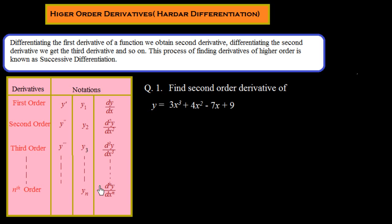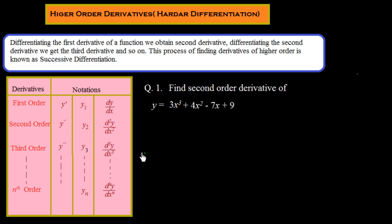Now let us take an example. We have to find the second order derivative of y = 3x³ + 4x² − 7x + 9. We need to find y-double-dash, or y2, or d²y/dx². We start by finding the first derivative.